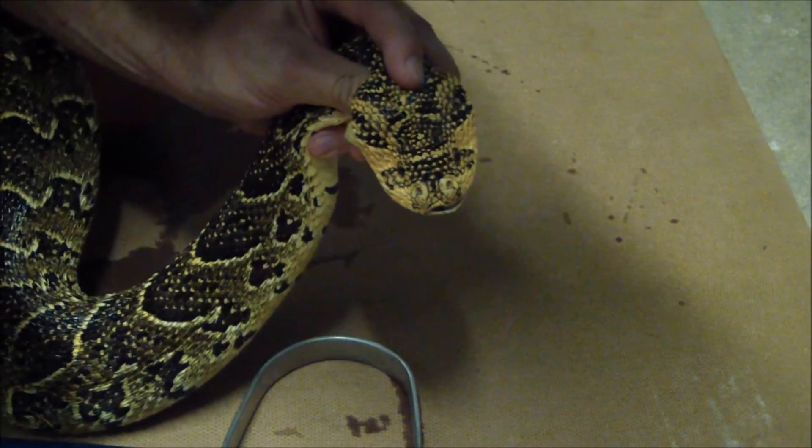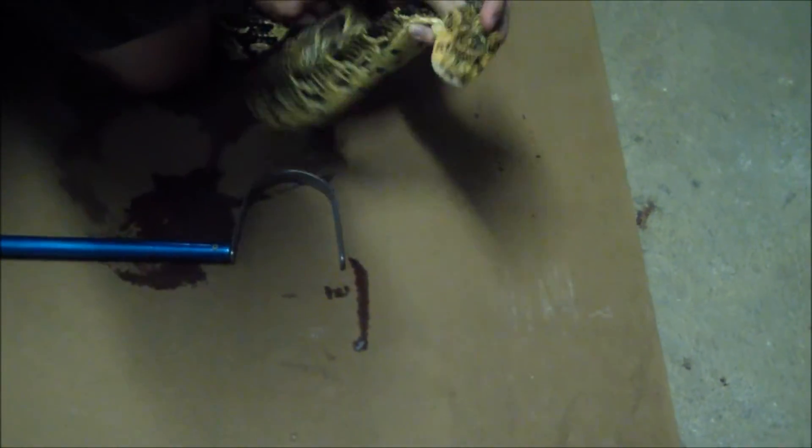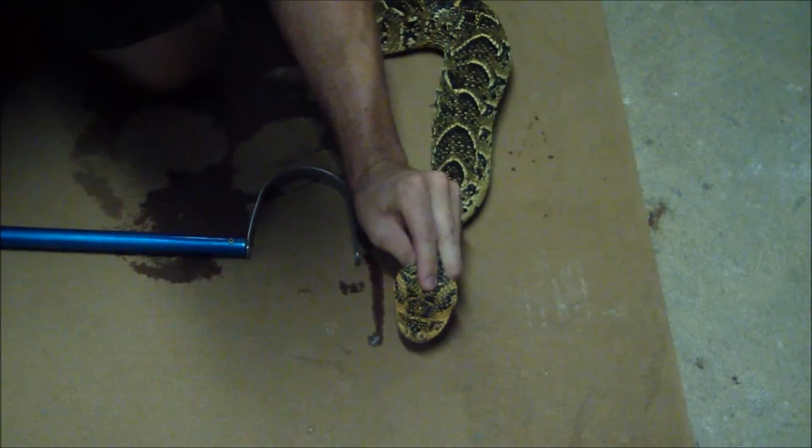Now a lot of people, sometimes when you're releasing a venomous snake, they'll throw it away from them or something like that. I prefer to do what I call a reverse pinning method. Not always easy with something like a puff adder.